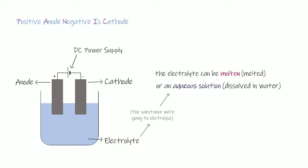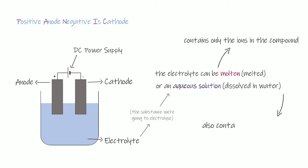If your electrolyte is molten, it will only contain the ions in that compound and nothing else. Whereas if your electrolyte is an aqueous solution — because you've dissolved it in water — it will also contain the ions from the water, because the water will split up into two ions of its own. If your electrolyte is an aqueous solution, that's going to change the products that you would form compared to if your electrolyte was molten.